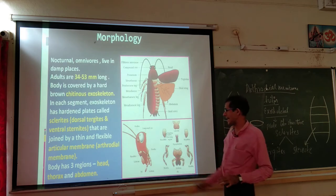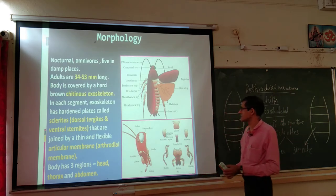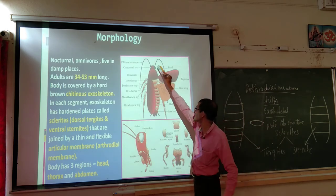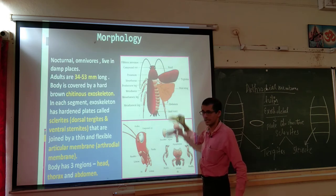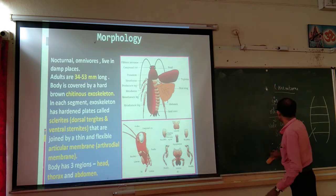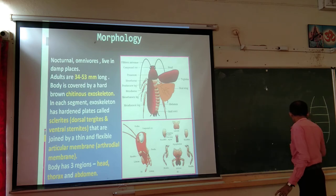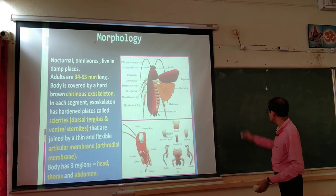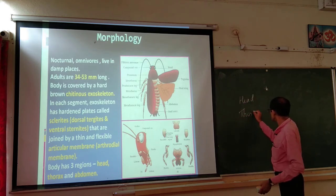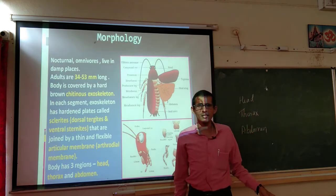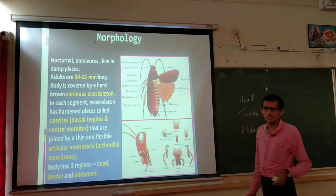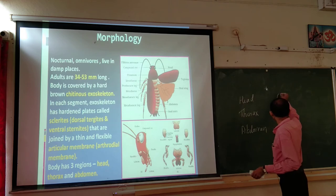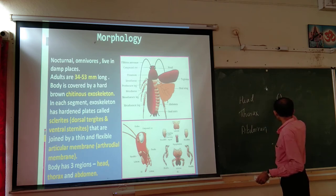The body has three regions: head, thorax, and abdomen. In cockroach, as in all insects, the body is divided into these three portions. The head is connected to the thorax by a small, flexible neck, followed by the thorax and abdomen.